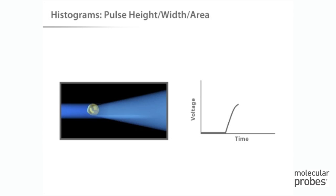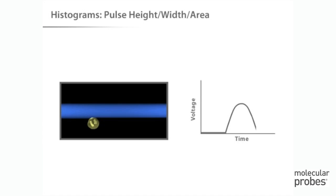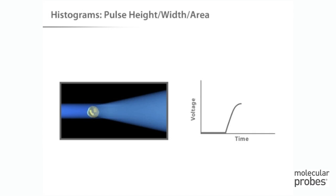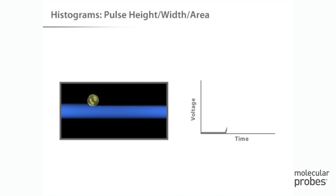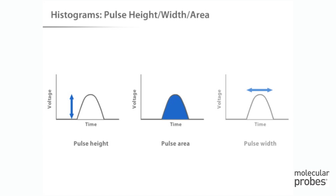Let's take a look at data collection. As a cell passes through the laser beam in the flow cytometer, it sends a light pulse to scatter and fluorescence detectors. That light is converted into a voltage pulse. In order for this pulse to be useful for analysis, it must be converted into a numerical value, and this can be done in any of three ways: the height of the pulse can be measured, the area under the pulse can be measured, or the width of the pulse can be measured.